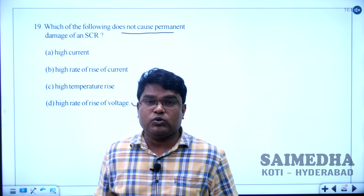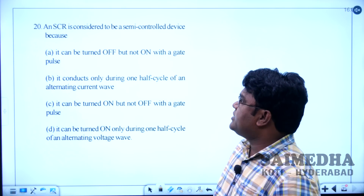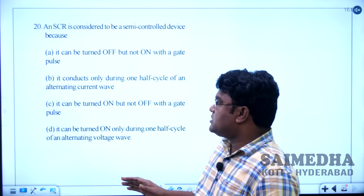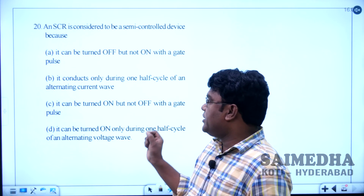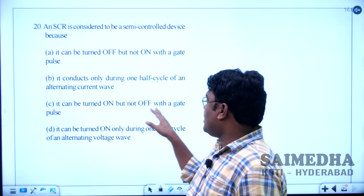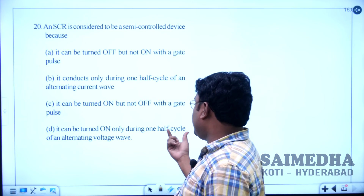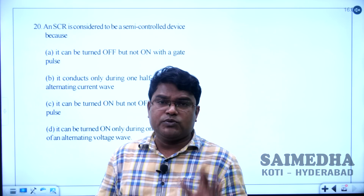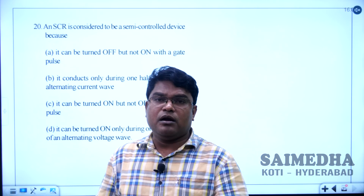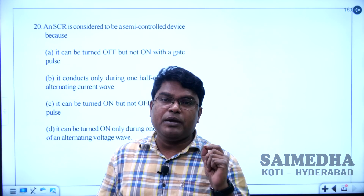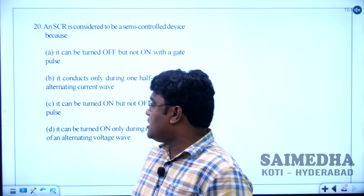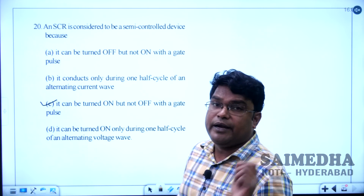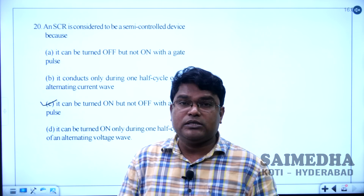Let us solve question number 20. An SCR is considered a semi-controlled device because — option C: it can be turned on but not turned off with gate current pulses. The turn-on transition can be controlled whereas the turn-off transition cannot be controlled by using gate current pulses. Option C is the correct answer.